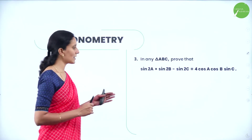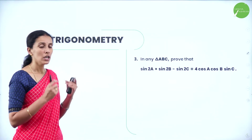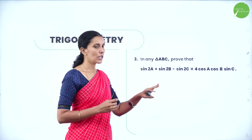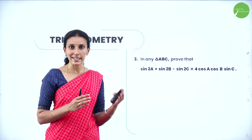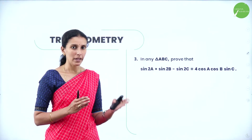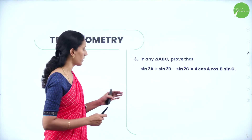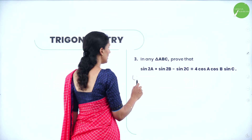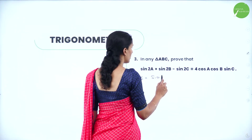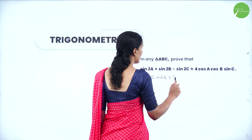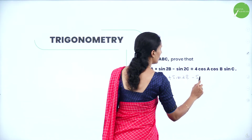Next problem: prove sin2A + sin2B − sin2C = 4cosA·cosB·sinC, where A, B, C are angles of a triangle. Remember the formulas: sin(A+B) = sinC, cos(A+B) = −cosC, tan(A+B) = −tanC. Consider the left hand side: sin2A + sin2B − sin2C.